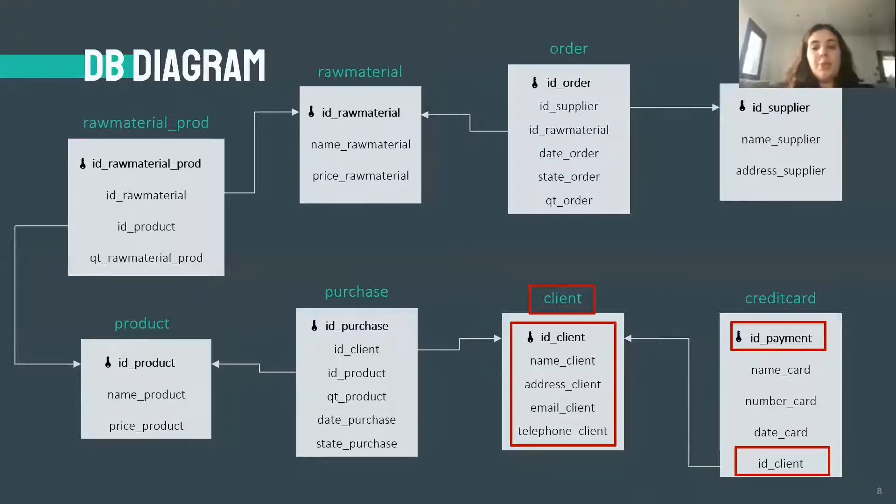Each client makes a purchase. Each purchase is characterized by the product bought, the quantity purchased, the date and the state of the purchase. Again, confirmed, processing or delivered. The client is characterized by its ID number, name, address, email and telephone number.